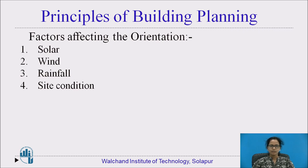The rainfall is another factor. For rainfall, we have to know the intensity of the rainfall and the direction. The site condition and the location of the plot are also important factors which should be considered during the orientation of the building.